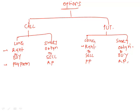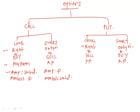In case of a long call, that is a right to buy. Short call is an obligation to sell. Long put is a right to sell, and short put is an obligation to buy. When you buy an option and receive a right, you pay a premium. When you sell, you receive a premium. For a long call, maximum profit is unlimited and maximum loss is the premium. For a short call, maximum profit is the premium and maximum loss is unlimited.